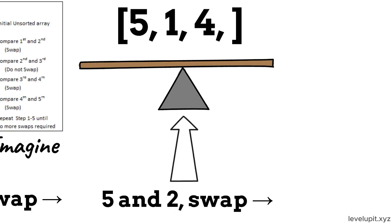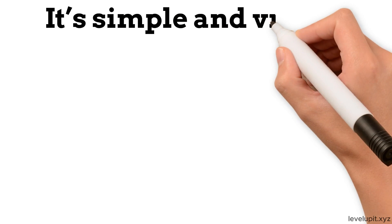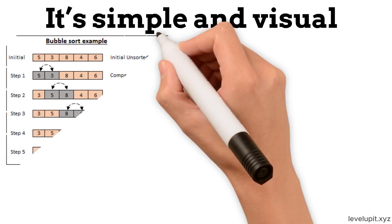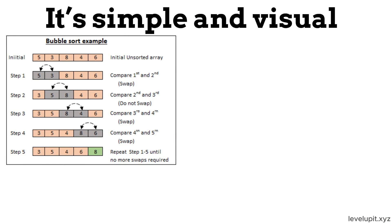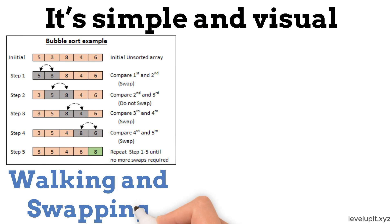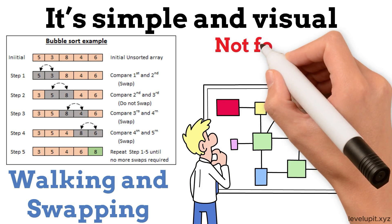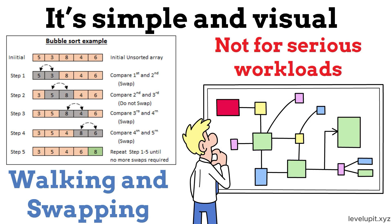We repeat passes until no swaps are needed. It is simple and visual, like gently pushing larger bubbles to the top. But if the list is long, it keeps walking and swapping many times, which makes it slow. Bubble sort is fine for teaching and tiny cases, but not for serious workloads.